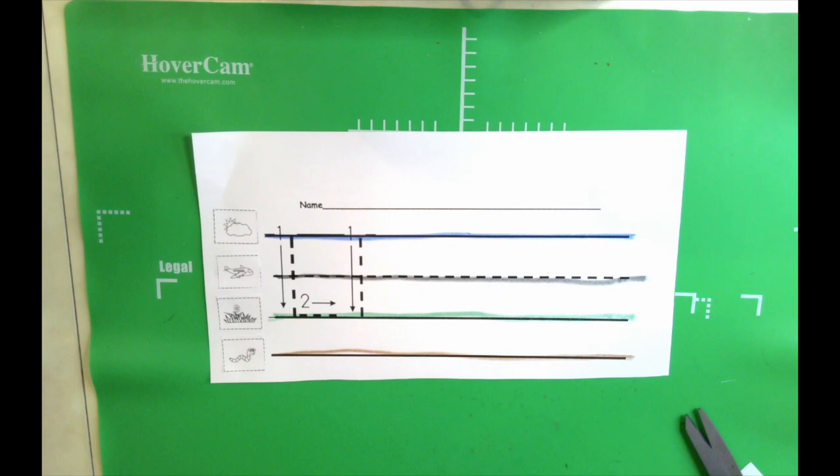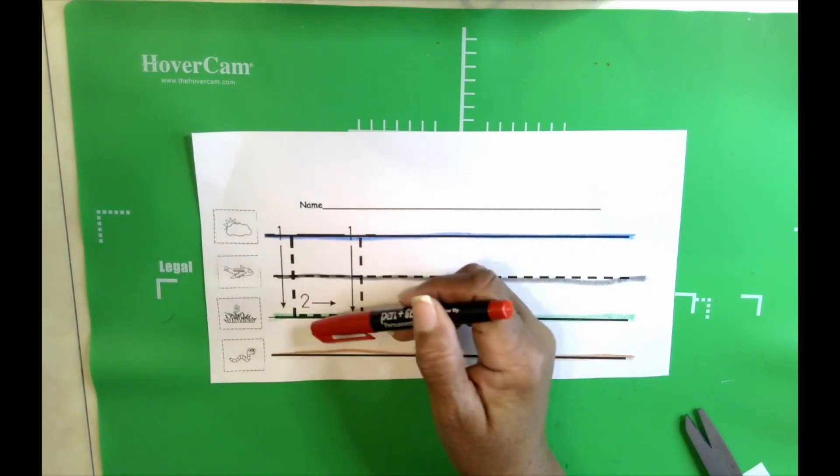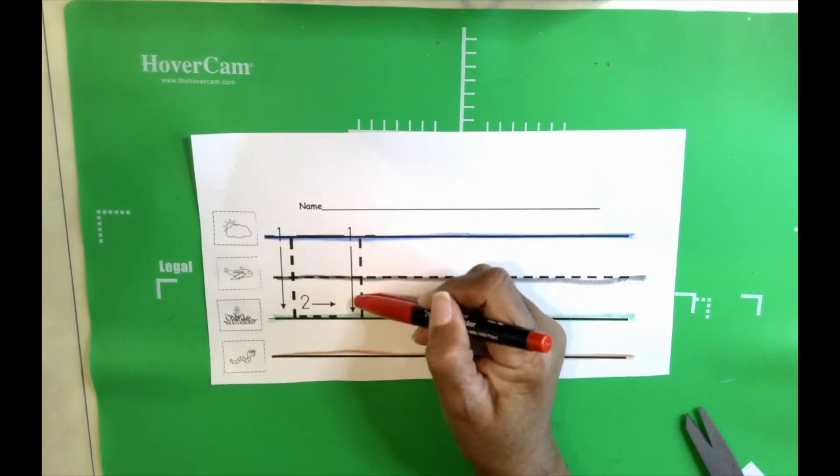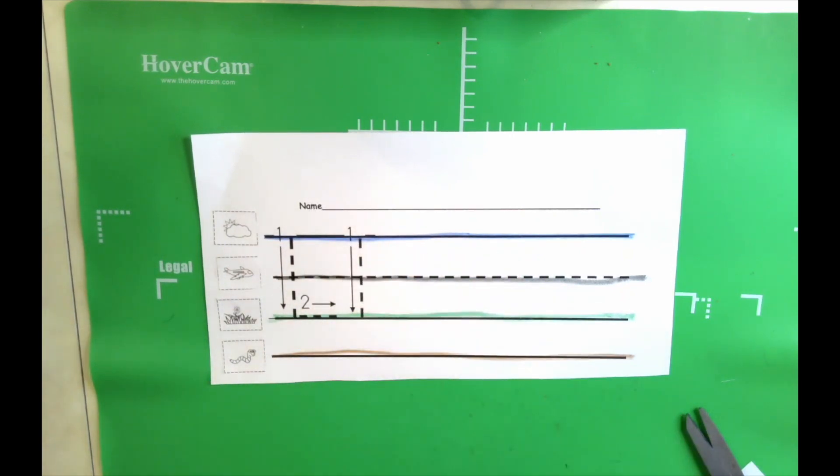How many strokes does it take to make the uppercase L? One, two. Only two strokes. How many strokes does it take to make the lowercase L? Just one line? One stroke? How about that?